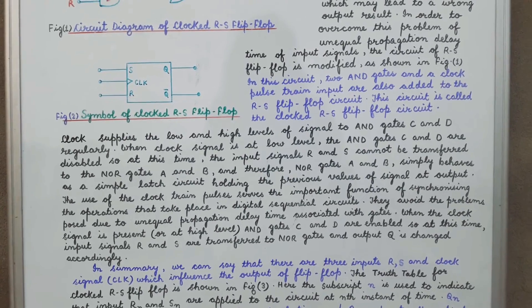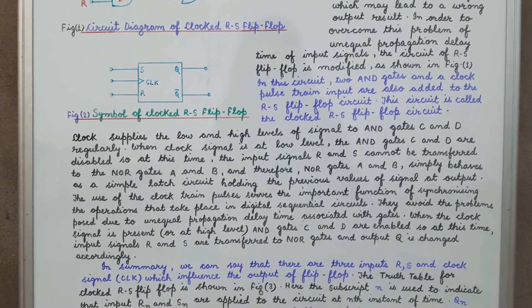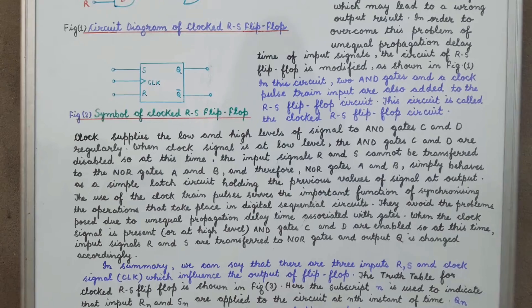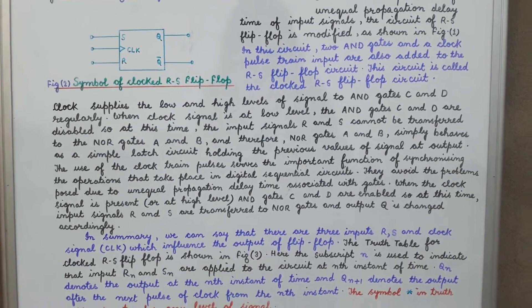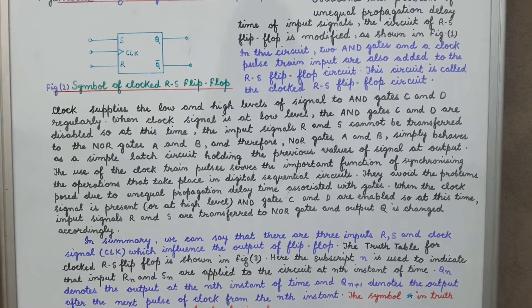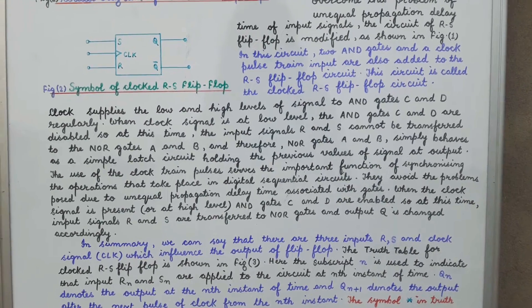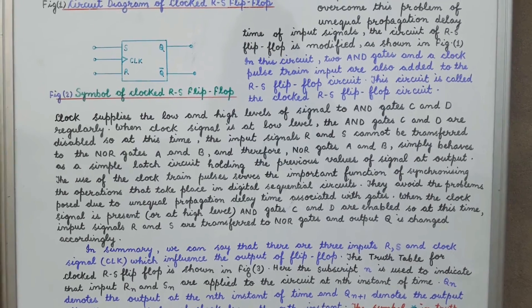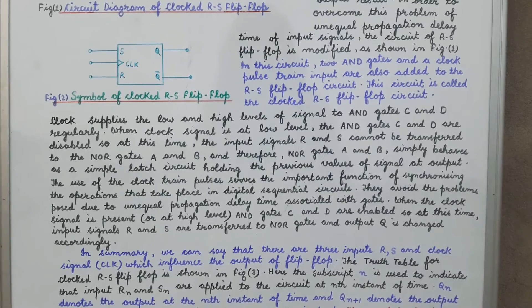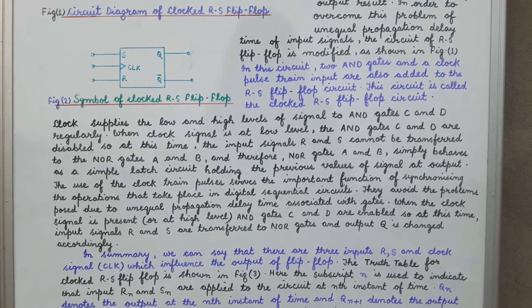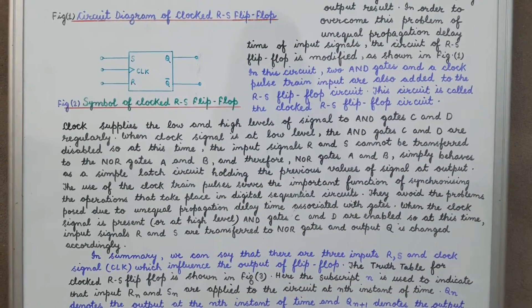So the advantage of the clock pulse is that the problem of unequal propagation delay time is overcome. When the clock signal is present — that is, when the clock value is 1 or at high level — then AND gates C and D are enabled. Now R and S are transferred to NOR gates A and B, and Q is changed accordingly.